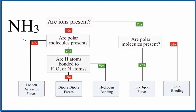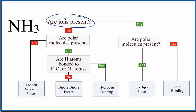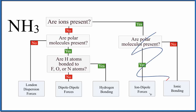Let's take a look at the intermolecular forces for NH3. This is ammonia. So the first thing we need to ask is, do we have ions present? Is there a positive or a negative charge after the NH3? And here there are no ions present, so we can just forget about all of this right here.